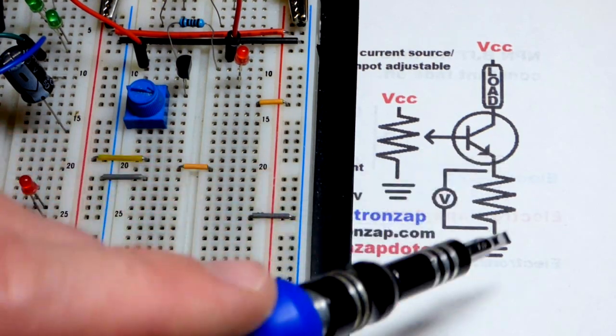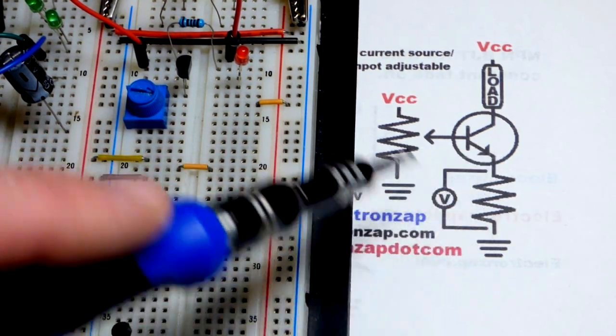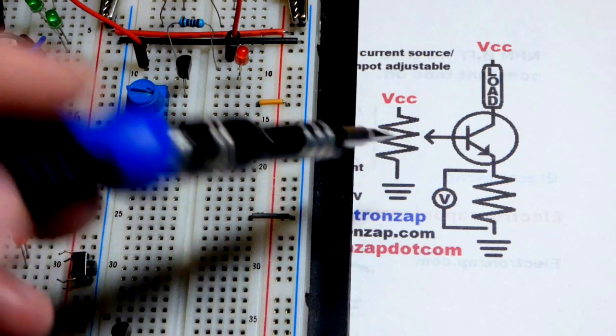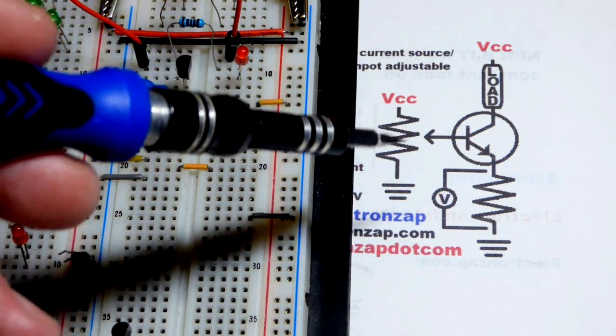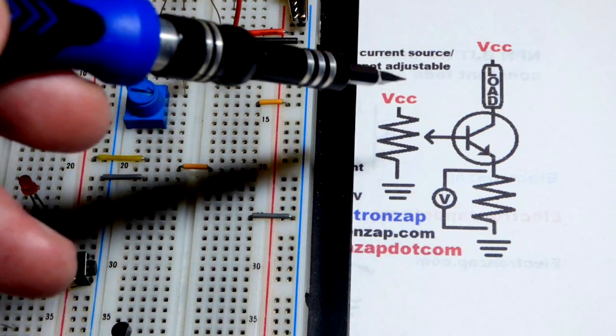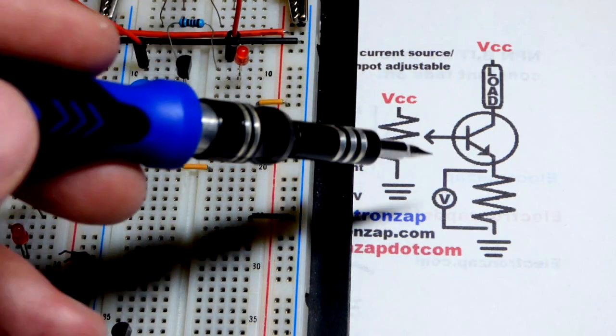We have to set a voltage across this lower resistor. We do that with a trim pot, so it's a voltage divider. We can vary the voltage based on the supply voltage, get a percentage of it.